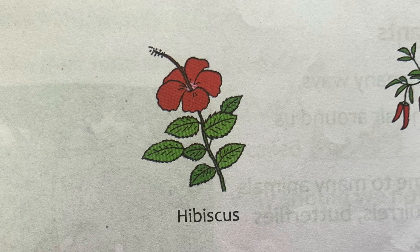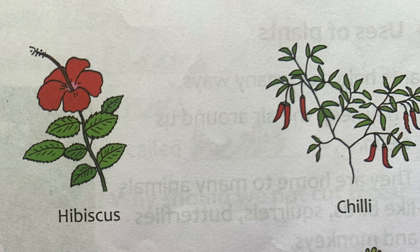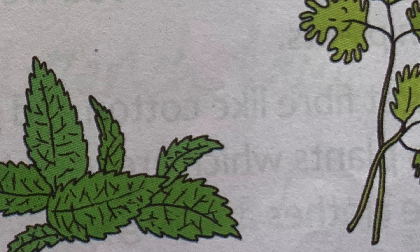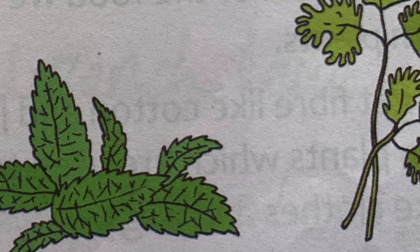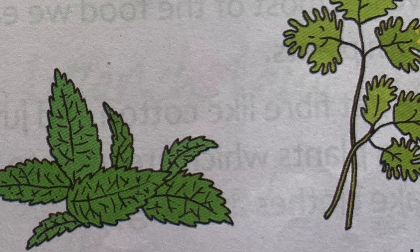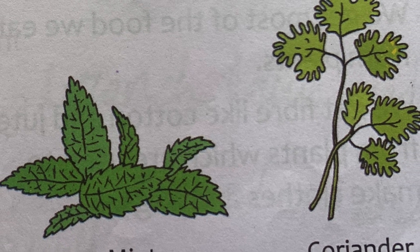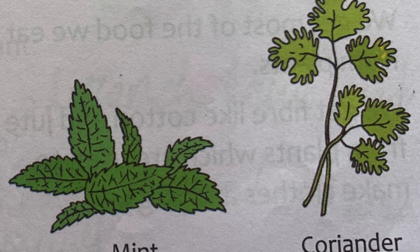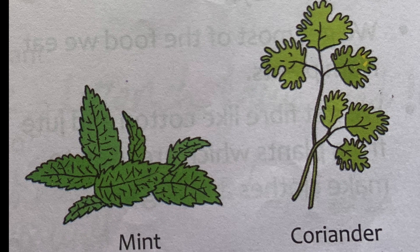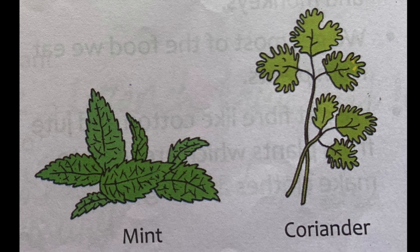Small plants with hard and woody stems are called shrubs. The rose, hibiscus and chili are examples. Small plants with soft stems are called herbs. Many herbs grow close to the ground. They do not grow tall like trees. We use herbs in our food every day — mint and coriander are two common herbs.